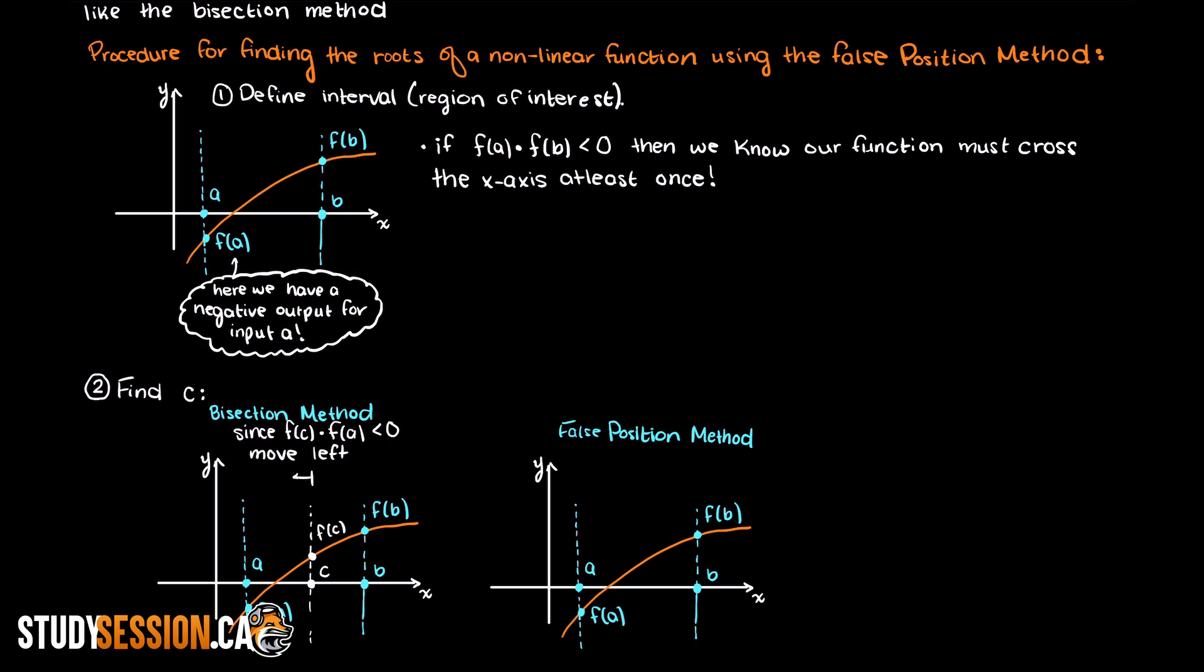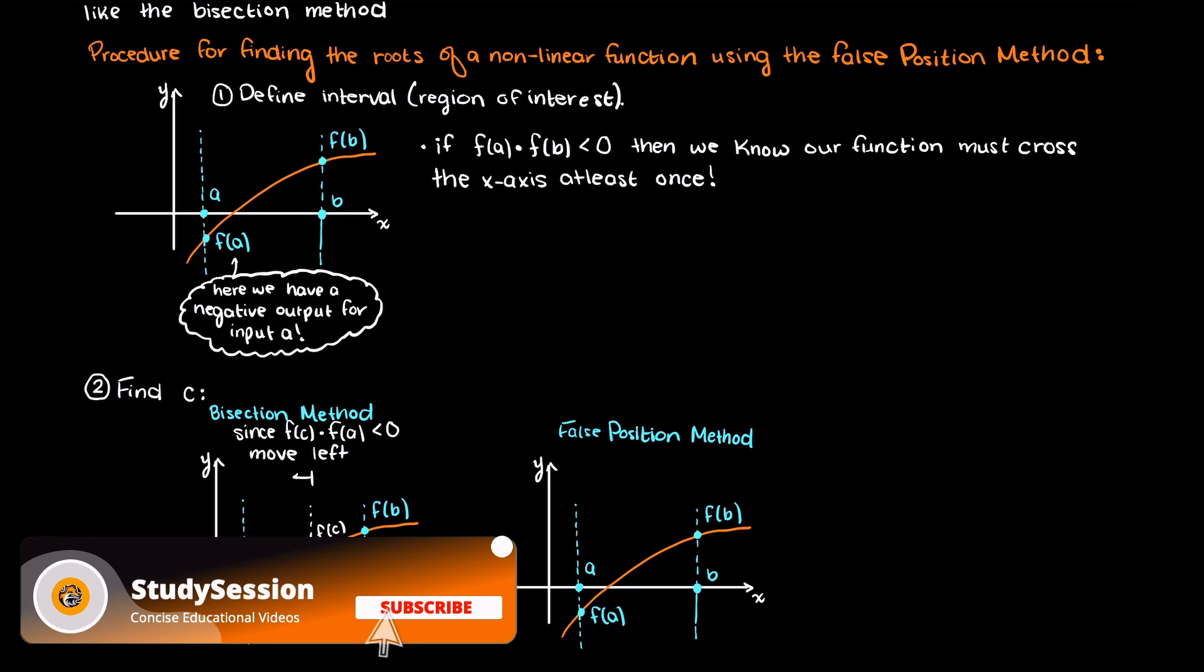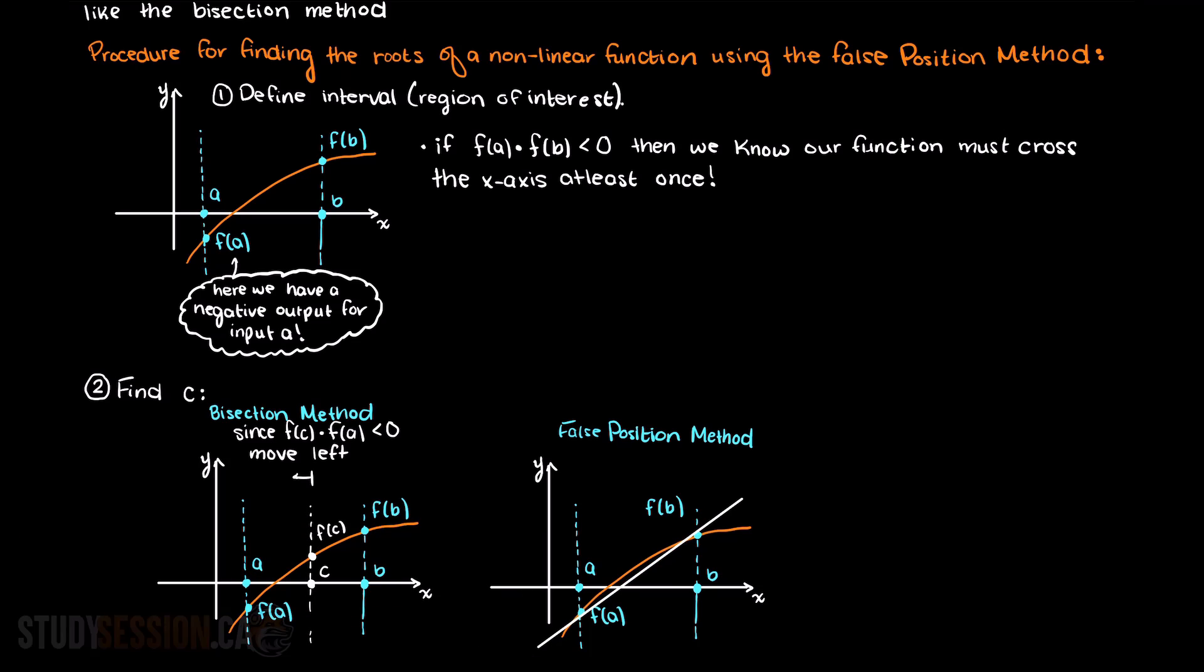So do you think there is any way that we could speed up finding our root? Well, what if we draw a line from f of a to f of b, and we take the point where we intersect our x-axis as our new c-value?